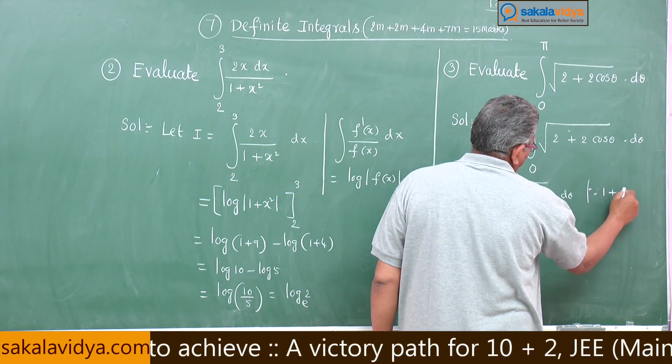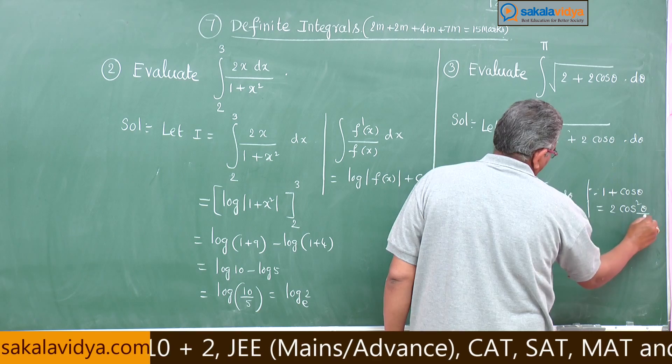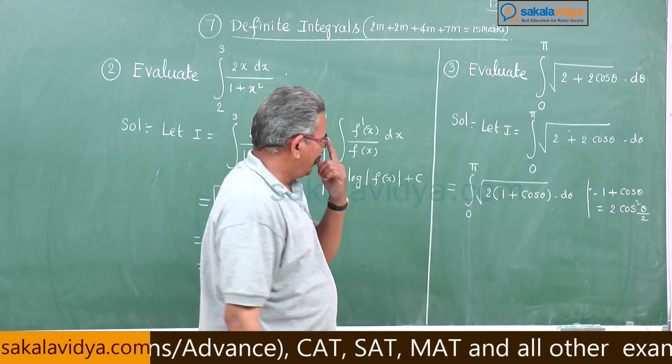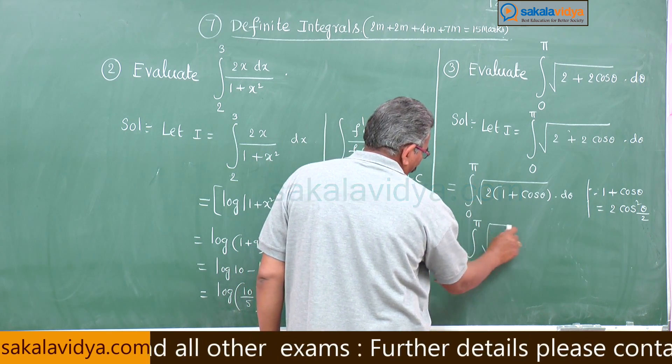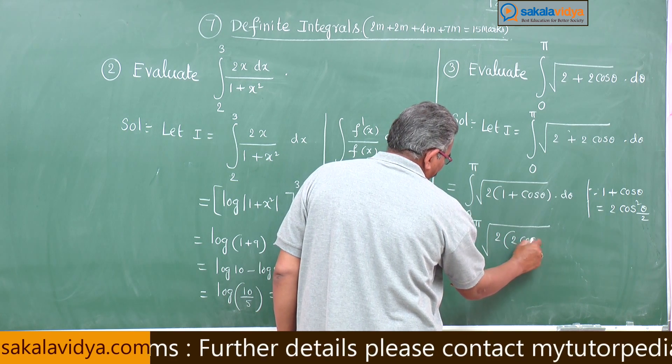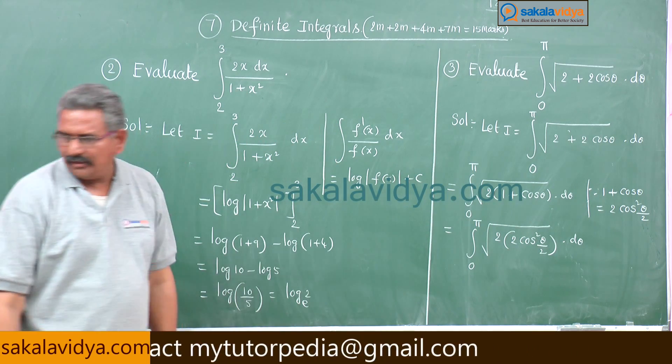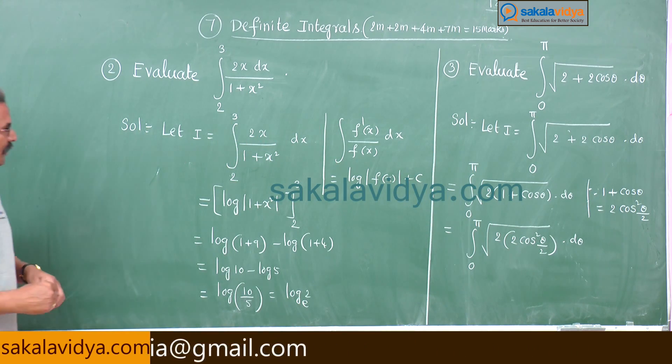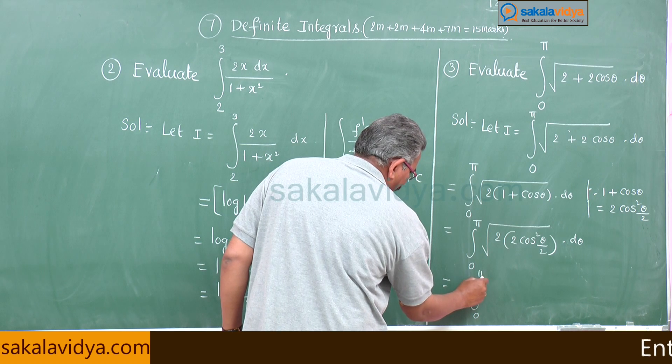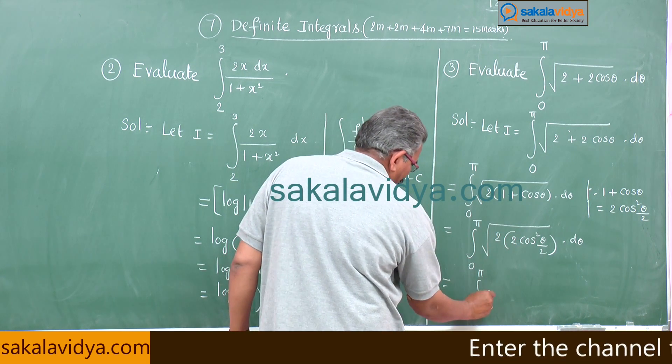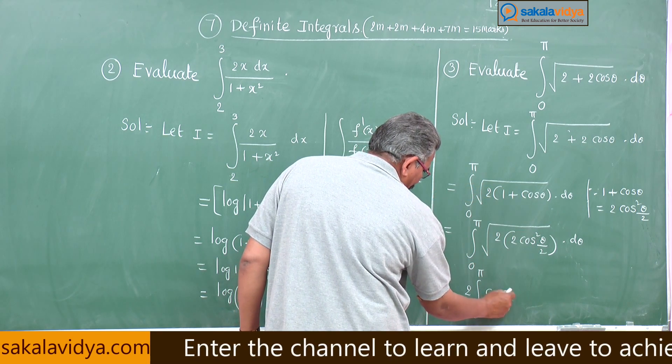This is equal to 0 to pi root of 2 common, 1 plus cos theta d theta. What is 1 plus cos theta? This is equal to 2 cos square theta by 2 from trigonometry formula. This we can write integral 0 to pi root of 2 into 2 cos square theta by 2 d theta. We can write this is integral 0 to pi, square root of 4 is 2, 2 comes outside, square root of cos square theta by 2 is cos theta by 2 d theta.